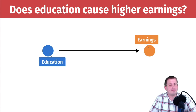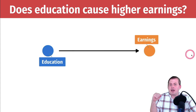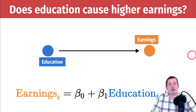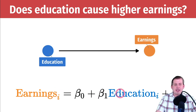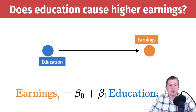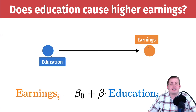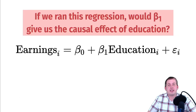Does going to college for an extra year cause you to earn more later? If you draw a simple DAG like this, education causes earnings. We could write this as a regression model where earnings is explained by education with an intercept term and an error term — that's just the standard OLS regression. So let's say you have a dataset of people with their years of education and their earnings. Could you run this regression and find the causal effect of education on earnings?